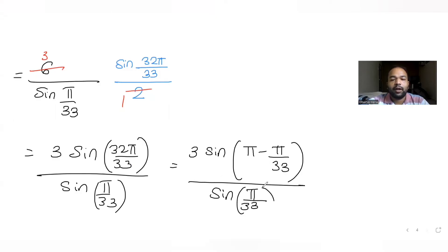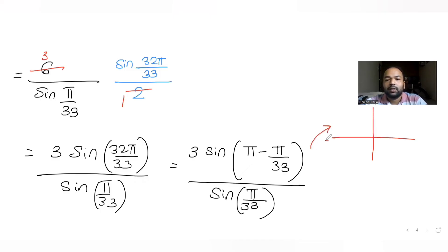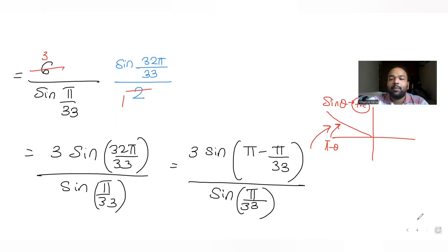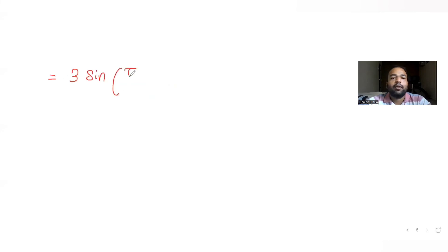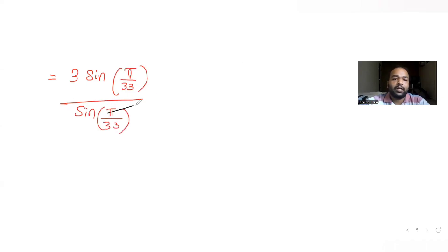Writing sin(32π/33) as sin(π − π/33): since sin(π − θ) = sin(θ) in the second quadrant, sin(π − π/33) = sin(π/33). So the expression becomes 3·sin(π/33)/sin(π/33), and cancelling gives the answer as 3.